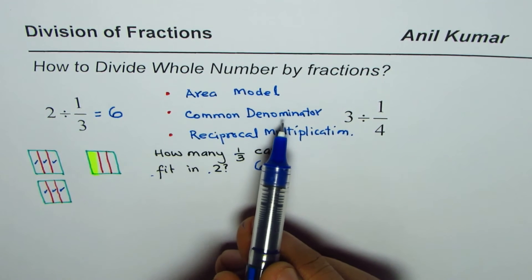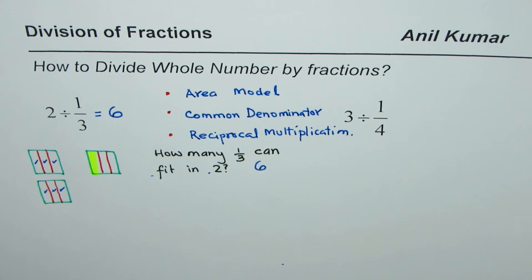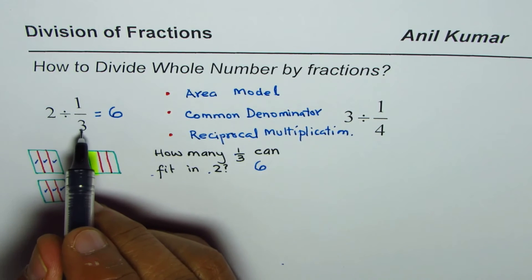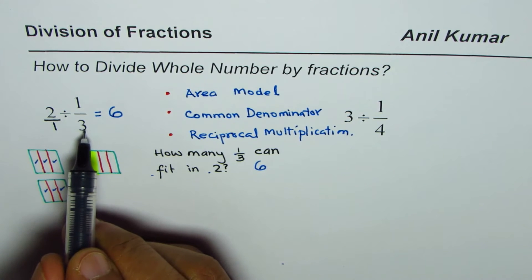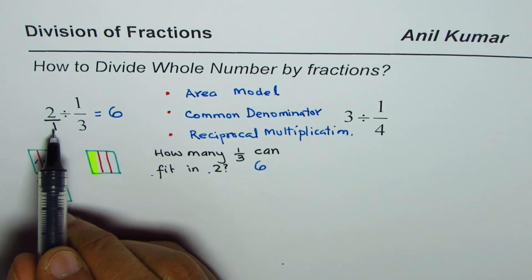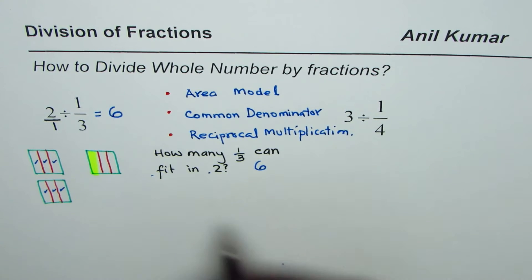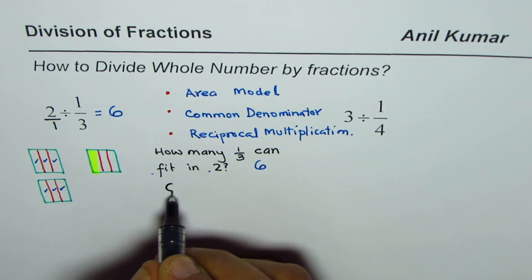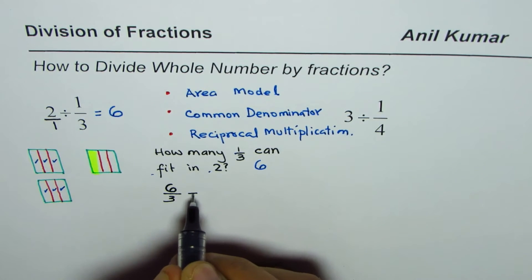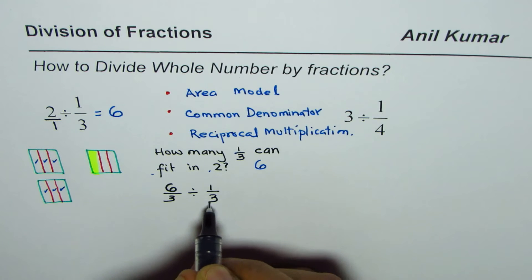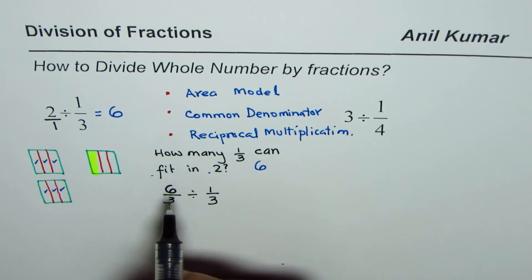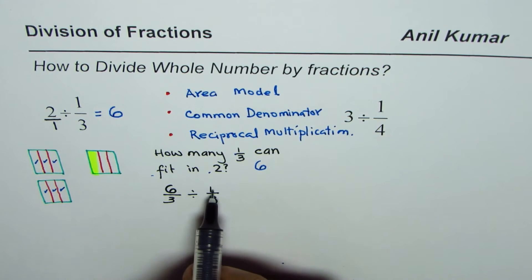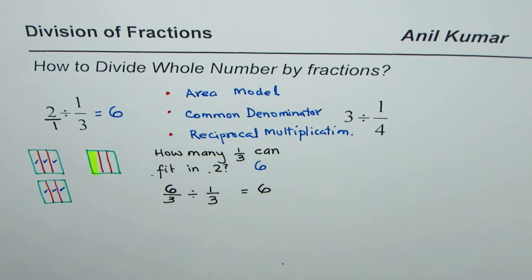Now let me use the common denominator strategy to solve the same question. We are dividing 2 by 1/3. The denominator of 2 is 1, so to make a common denominator we multiply: 2 times 3 gives us 6/3, and 1/3 stays as 1/3. Now both fractions have the same denominator, so we divide the numerators: 6 divided by 1 is 6. That is the result.